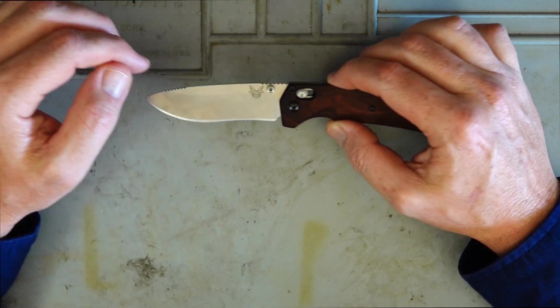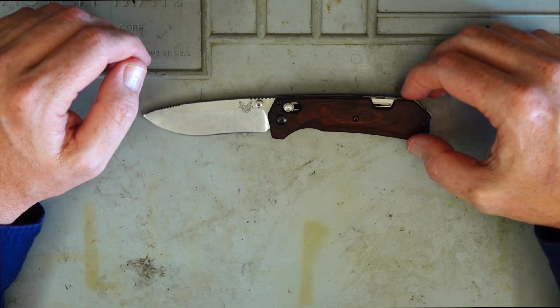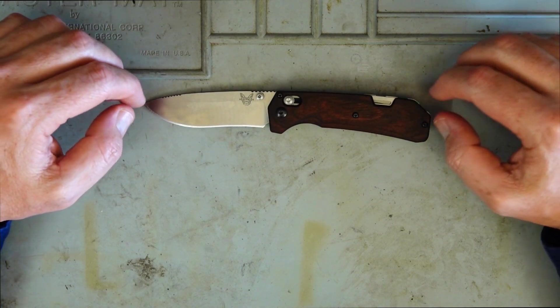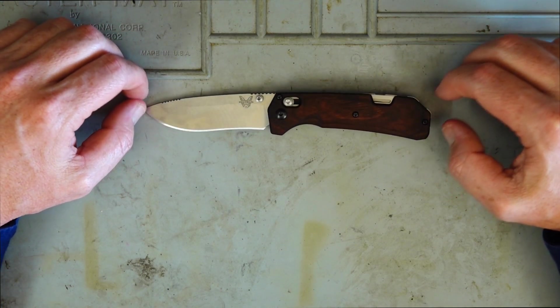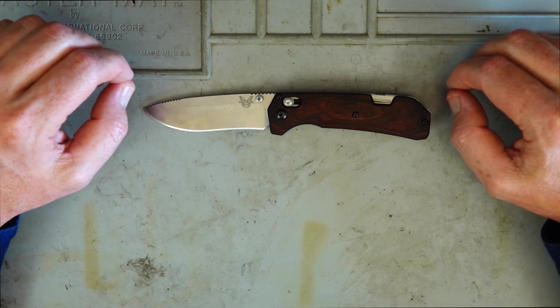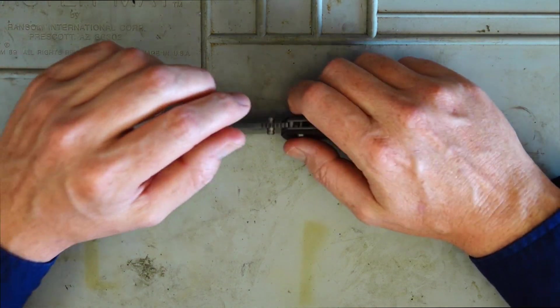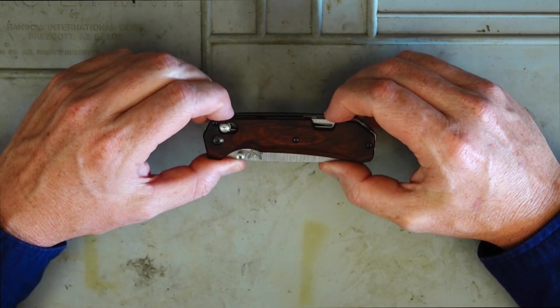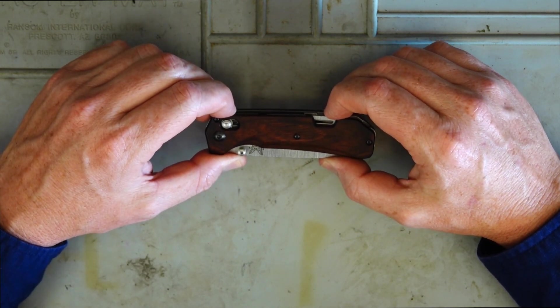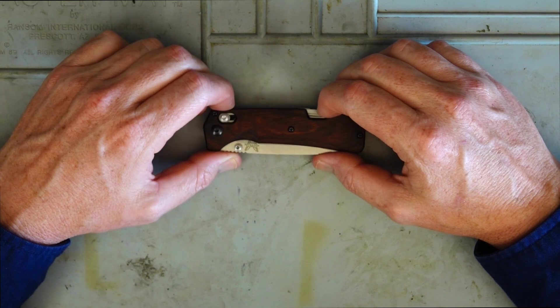Now the open or overall length of the knife is 7.84 inches or 19.9 cm. So basically 20 cm. Closed length is 4.24 inches or 11 cm. So look it's not an overall big knife. It sits quite nice in the pocket.